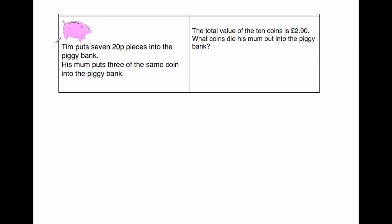Our last question says Tim puts 7 twenty pence pieces into a piggy bank. His mum puts 3 of the same coin into the piggy bank, and the total value of the 10 coins is £2.90. What coins did his mum put into the piggy bank? The first thing I would do is work out how much money Tim had in the piggy bank before his mum put anything in. He had 7 twenty pence pieces, so we do 20 multiplied by 7. 7 times 0 is 0, and 7 times 2 is 14, so it's £1.40.